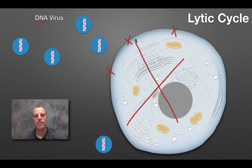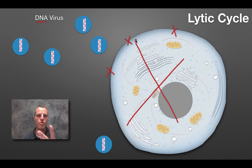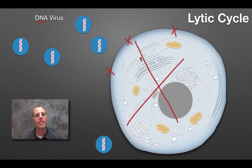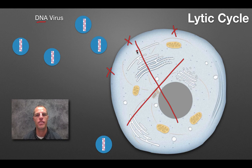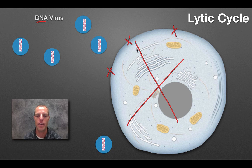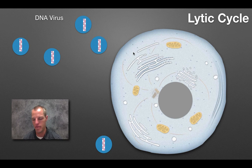The lytic cycle is the cycle of a virus attaching, invading, and taking over those two factories — the gene factory and the coat factory. Why does it have to take them over? Because by itself it cannot do those things. It has to use the processes of the living cell to reproduce, because that virus is not alive.